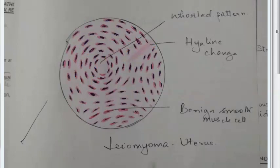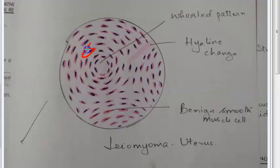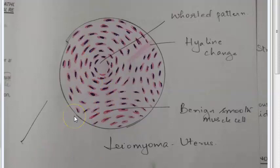Histologically, leomyomas are composed of two tissue elements: whorled bundles of smooth muscle cells admixed with a variable amount of connective tissue. The smooth muscle cells are uniform in size and shape, have abundant cytoplasm, and have a central oval nucleus. Cellular leomyoma has a preponderance of smooth muscle elements.